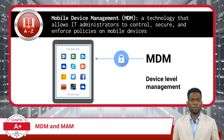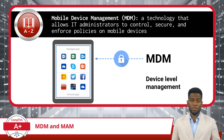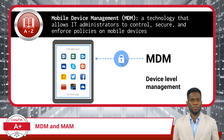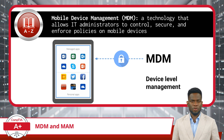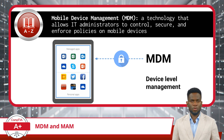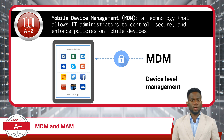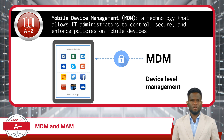A perfect example would be configuring corporate email accounts to use encrypted protocols only. It also allows for the monitoring and enforcement of compliance, like requiring two-factor authentication, as well as the ability to remotely lock, erase, or wipe the contents of a device that is lost or stolen, thereby protecting sensitive corporate information.